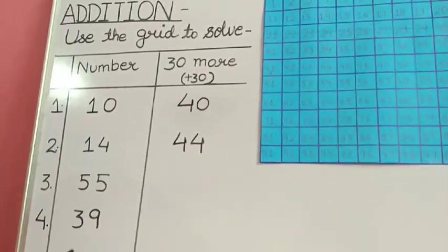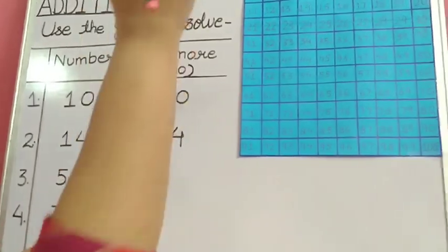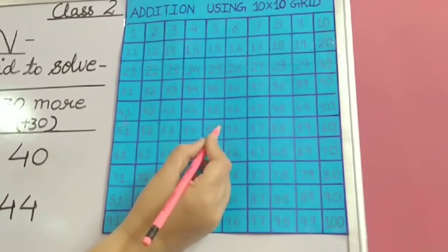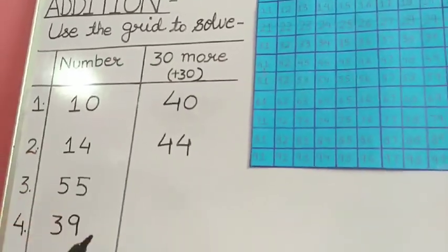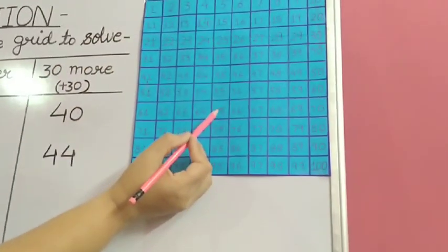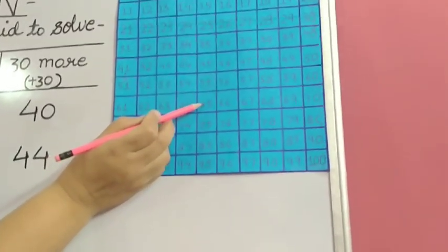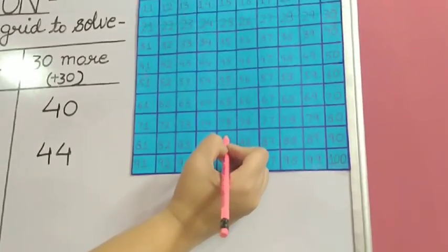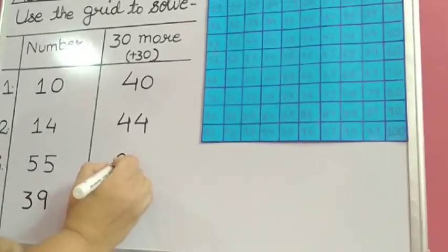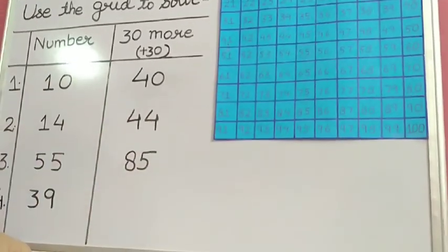The next number is 55. Let's find 55 on the grid. We have to add 30, so we will move 3 rows below — 1, 2 and 3. We reached 85. See how easy it is to add using a grid. The answer is 85.